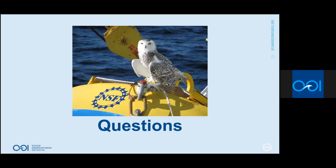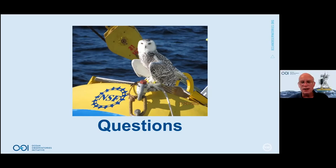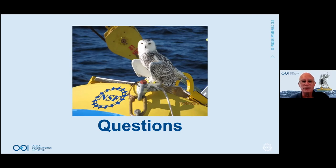Question: What is the most exciting discovery produced by the CGSN arrays? There's been some really interesting work at the Irminger Sea array showing first of all that deep convection happens there at all — which wasn't really known until we started — and then how prevalent it is and how the deeper basin interacts with boundary currents to create and transport that deep water around the global ocean.